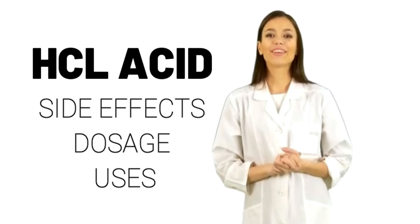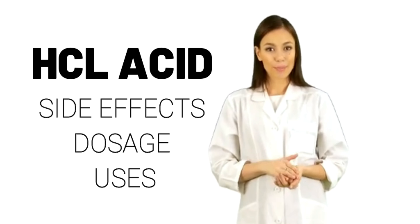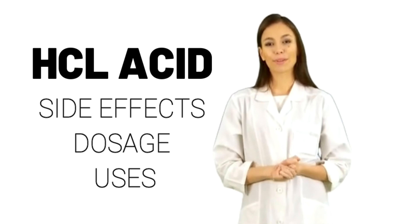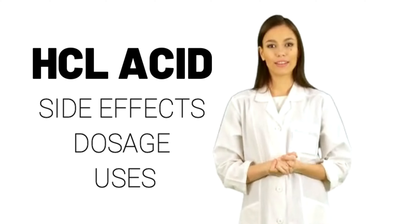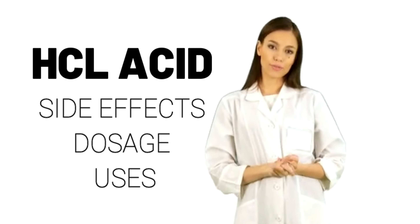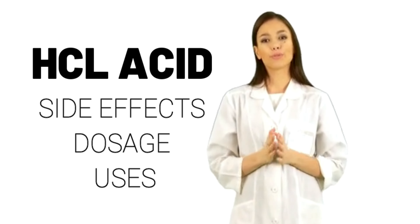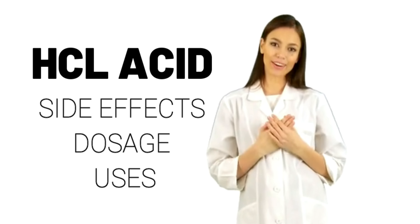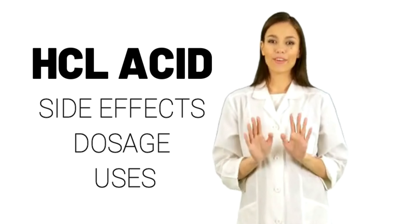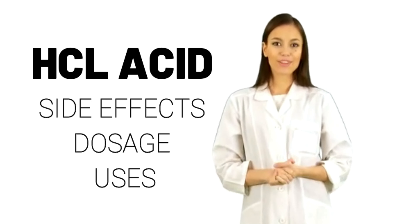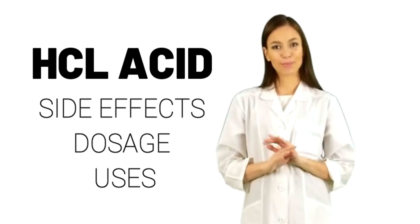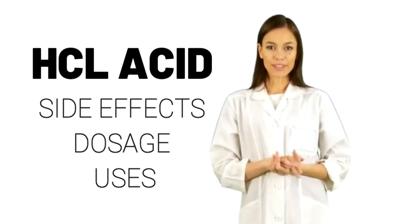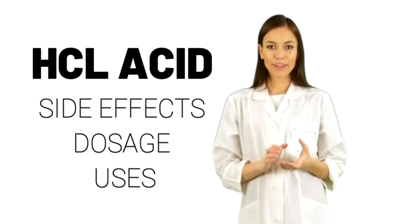Production of chemicals: hydrochloric acid is used to produce various chemicals, including chlorides, tin, vinyl chloride, phosphoric acid, ammonium chloride, and calcium chloride.